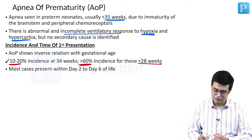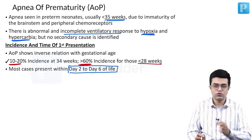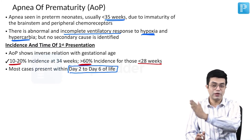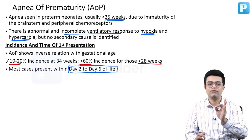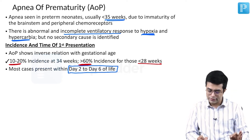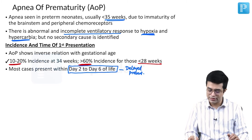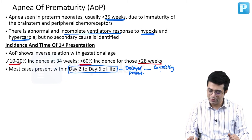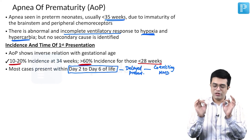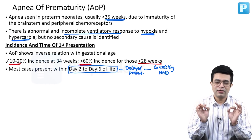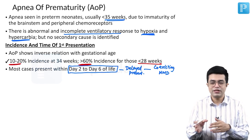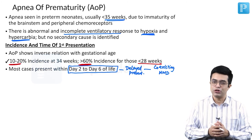Most cases will present within day 2 to day 6 of life — that is, the first week of life beyond 24 hours is the usual time of presentation. Regarding delayed presentation, this may be seen only if there is coexisting HMD — hyaline membrane disease or RDS. Isolated apnea in a premature child will always occur within 2 to 6 days if it is due to apnea of prematurity.